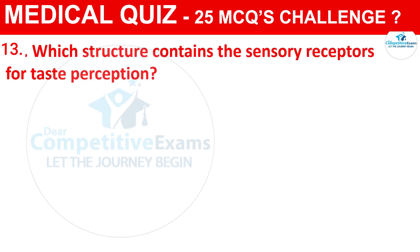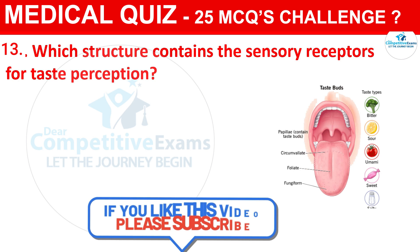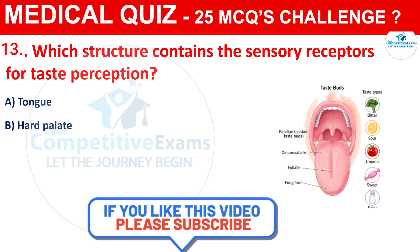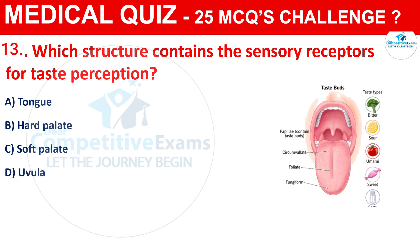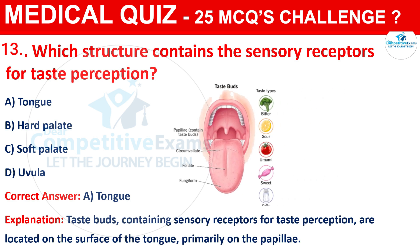Question 13: Which structure contains the sensory receptors for taste perception? The options are Tongue, Hard Palate, Soft Palate, or Uvula. The correct answer is A, that is Tongue. Taste buds containing sensory receptors for taste perception are located on the surface of the tongue, primarily on the papillae.